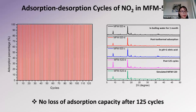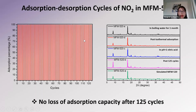After that, the NO2 adsorption and desorption cycles in this material were studied. There was no loss of adsorption capacity or crystallinity within 125 cycles. This cycling experiment demonstrated the excellent long-term stability of this material against NO2, which satisfies the first requirement of an ideal NO2 capture system.